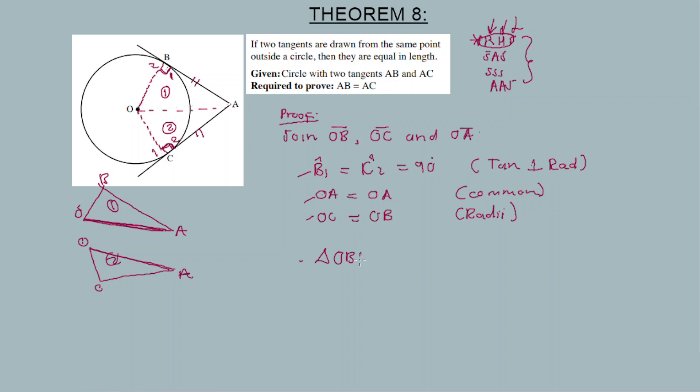Triangle OBA is congruent to triangle OAC. Therefore, since the triangles are congruent, the sides are equal. Then these two sides are equal as well. AB is equal to AC. We've proven that these tangents are equivalent.